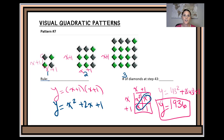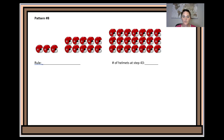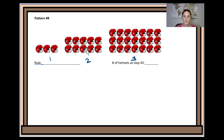Okay, let's go ahead and look at our next pattern. Again, I'm going to start by writing my position number: position 1, 2, and 3. We already have our rectangle, so I just need to compare my dimensions to my position number. If I look at the height, I have one helmet high in the first position, two helmets high in the second position, three helmets high in the third position. So the height is going to be x (or n, whatever variable you're using).